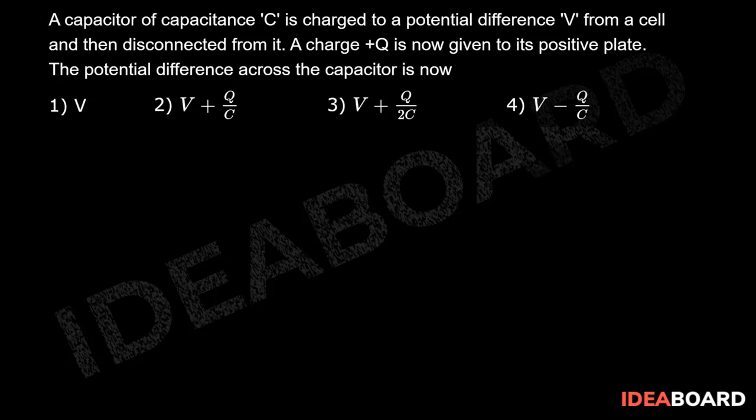Suppose we have a capacitor like this and of course initially the capacitance of this capacitor is C and potential difference is V. So that means charge initially Q initial will be equal to C into V.